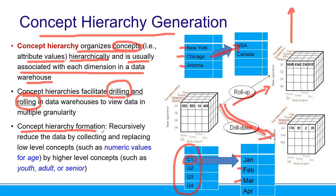The concept hierarchy formation recursively reduces the data by collecting and replacing low-level concepts. Low-level concept means if you have something like numbers, we can make it a higher-level concept. If it is higher, then we can aggregate — we can make a kind of summary. For example, if we have numerical values like income, we can make the higher-level concept: whether the income is low, medium, or high. We call this concept hierarchy generation.